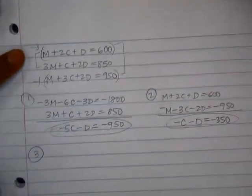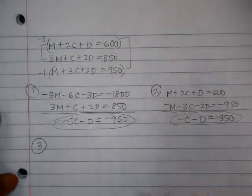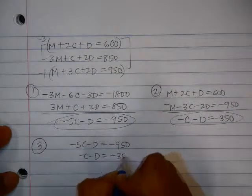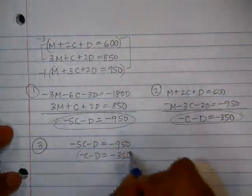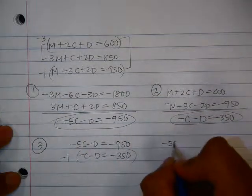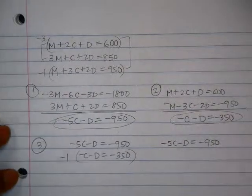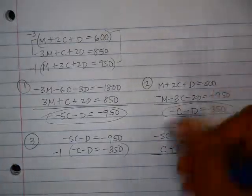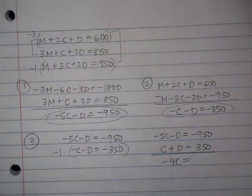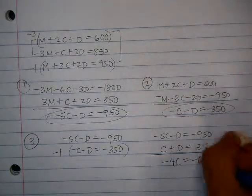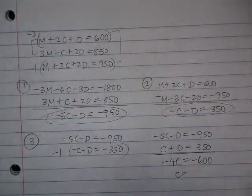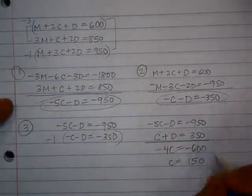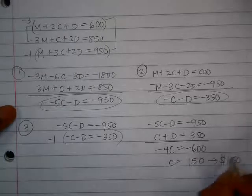The third step here is going to be to combine the two equations we came up with in steps one and two so that we can solve for C and D. I'm going to eliminate the D's here, but I need to multiply the second equation by a negative 1. So that second equation becomes positive C plus D equals 350. So here I get negative 4C equals negative 600. Dividing both sides by 4, I get C equals 150. So remember, we changed things to cents, so this would be equivalent to $1.50 for the cookie.